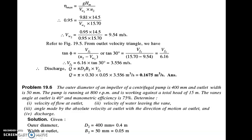Determine: the velocity of flow at outlet (Vf2), velocity of water leaving the vane (V2), the angle made by the absolute velocity at outlet with the direction of motion at outlet (beta), and discharge Q. Given: D2 = 0.4 m, B2 = 0.05 m.